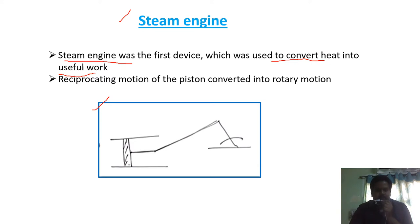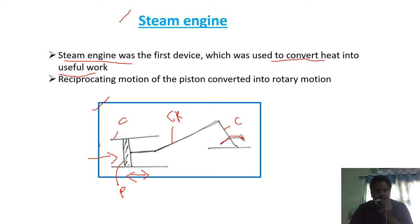It is almost the same as a petrol engine or diesel engine. Here also there will be a cylinder, piston, connecting rod, and crank. Once steam enters inside the cylinder, there will be a reciprocating motion of the piston that will be converted into rotary motion.